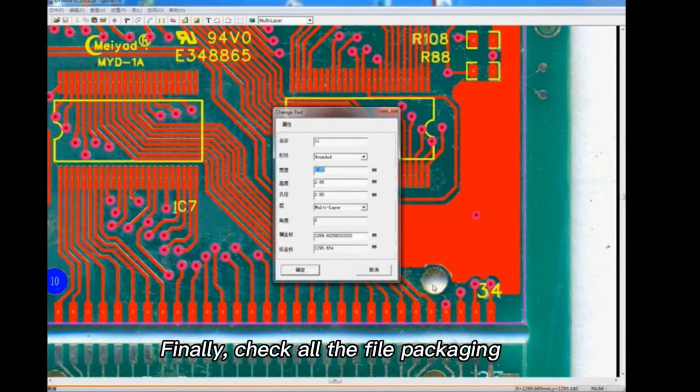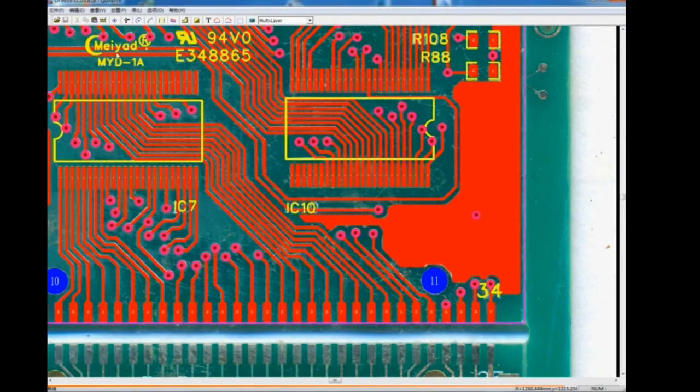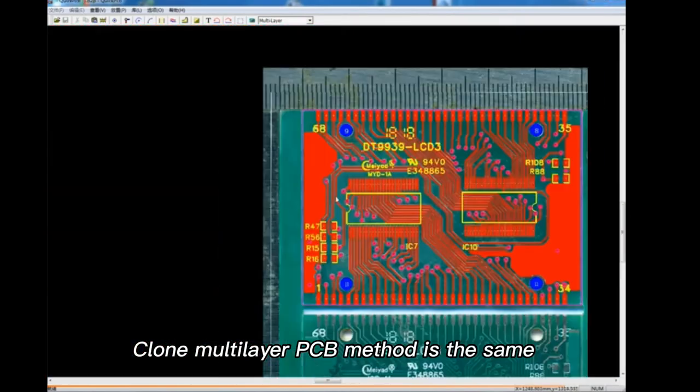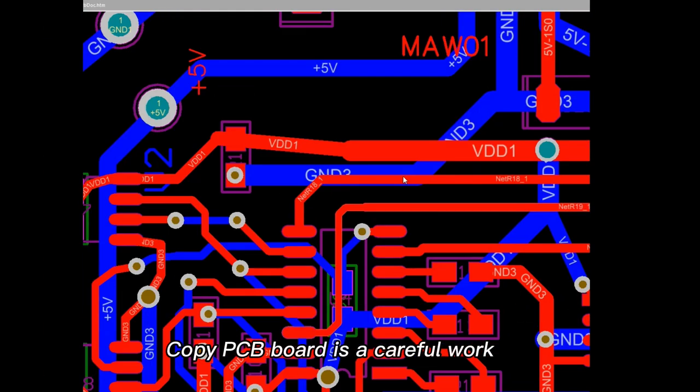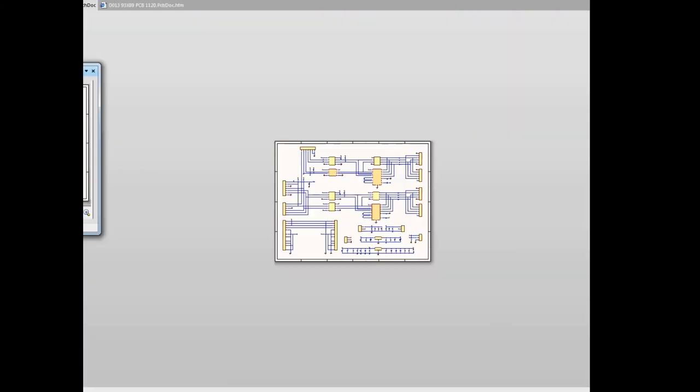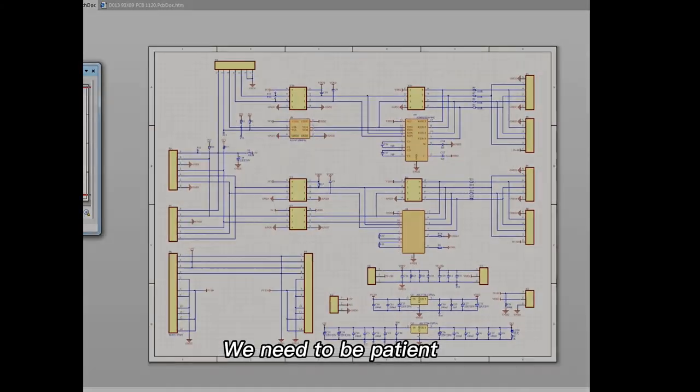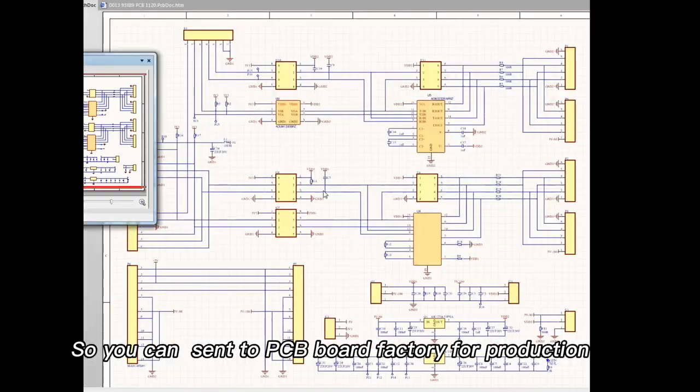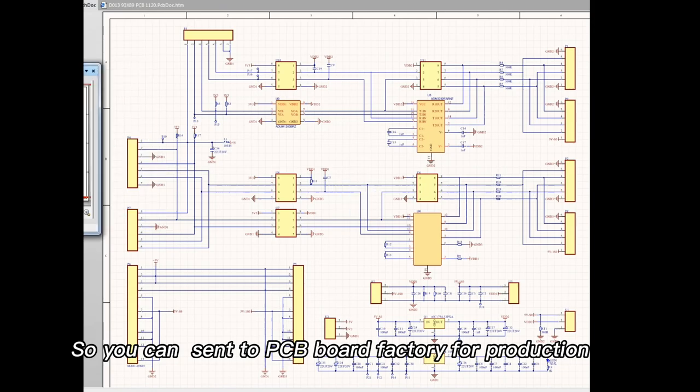Finally, check all the file packaging. Clone multilayer PCB method is the same. Copy PCB board is a careful work. We need to be patient. So you can send to PCB board factory for production.